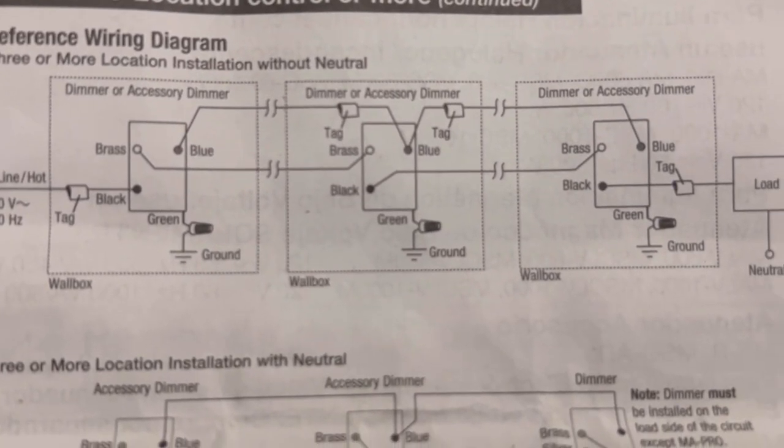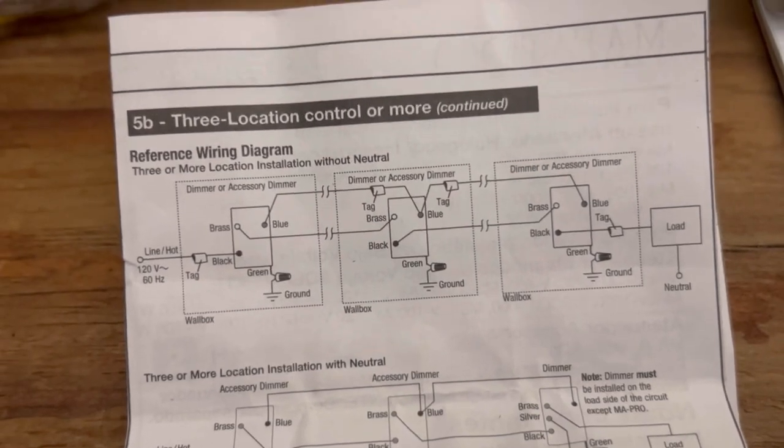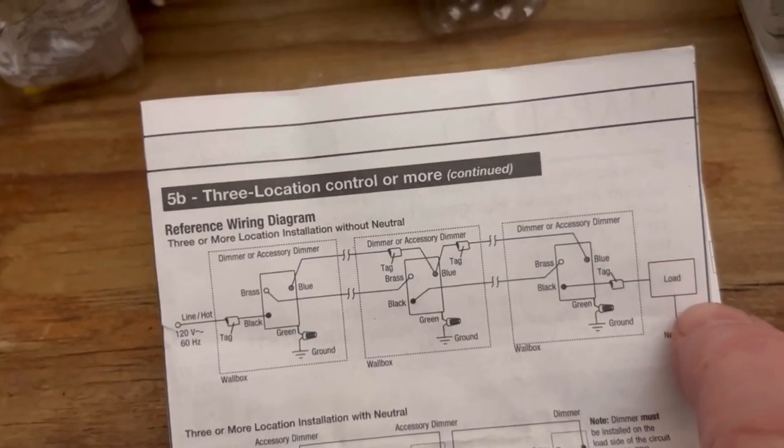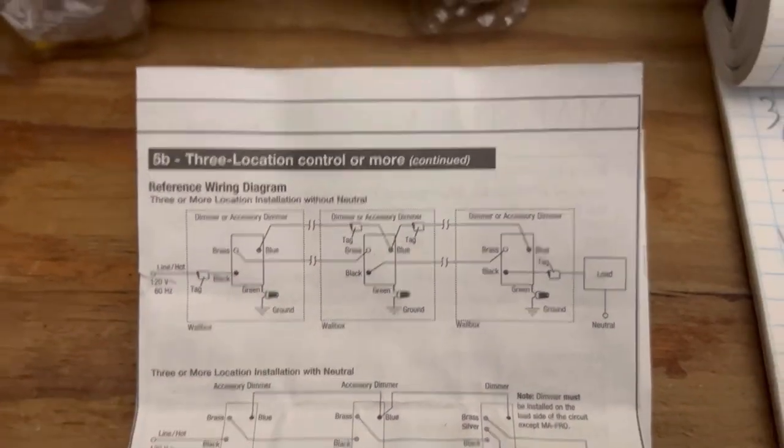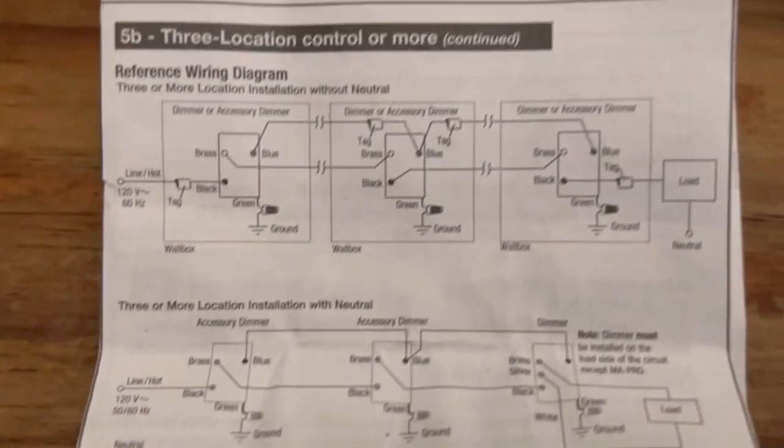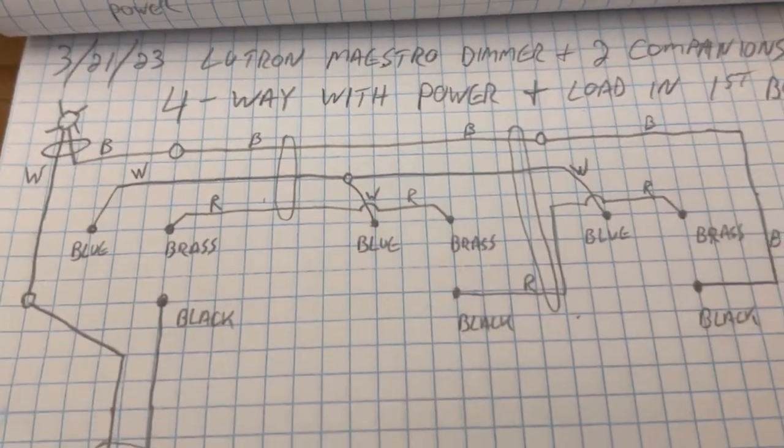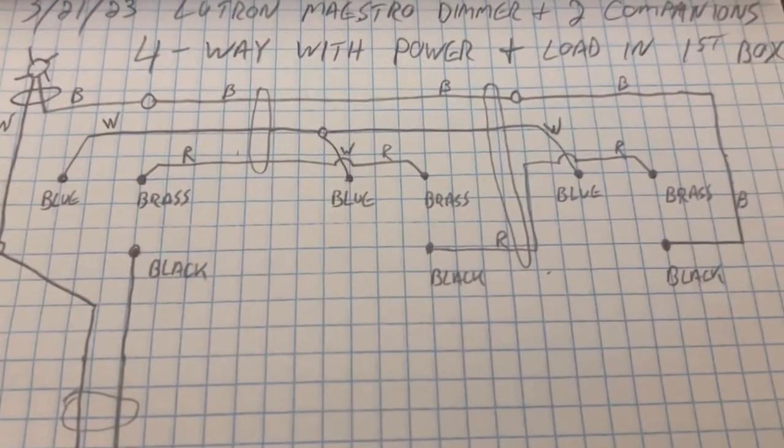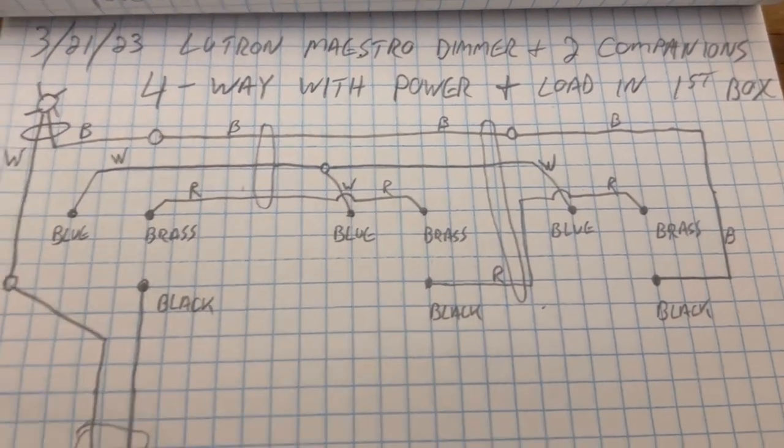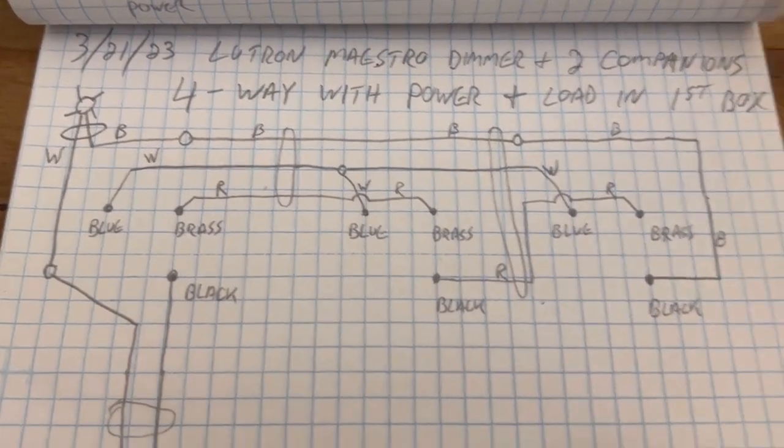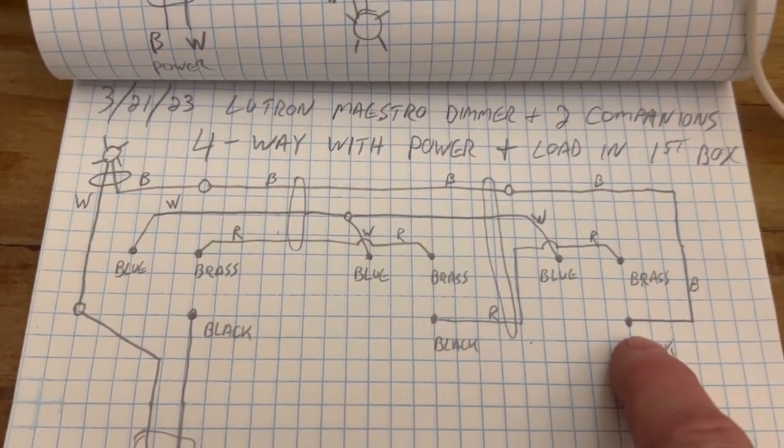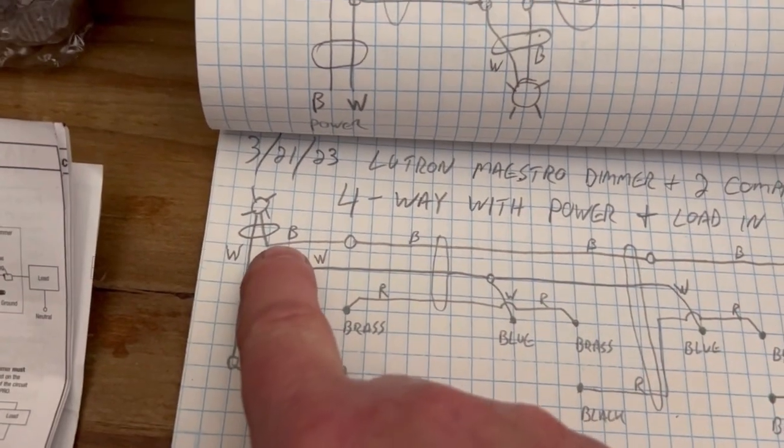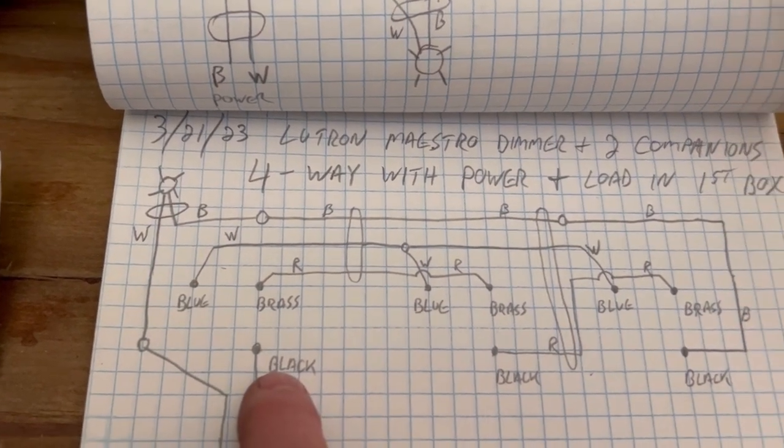But I want my load to be coming out of the same box that my line power is coming into. So I figured I better draw that out. Yeah, that's what I got here. Basically the only difference is I'm taking the output of this last switch and I'm bringing it back into the first box.